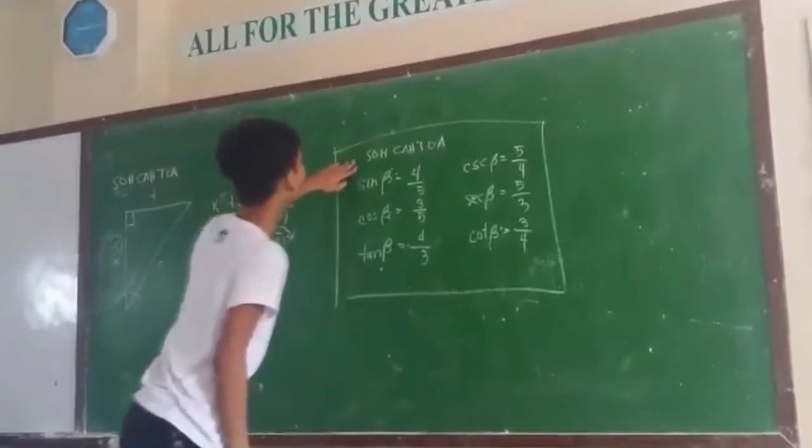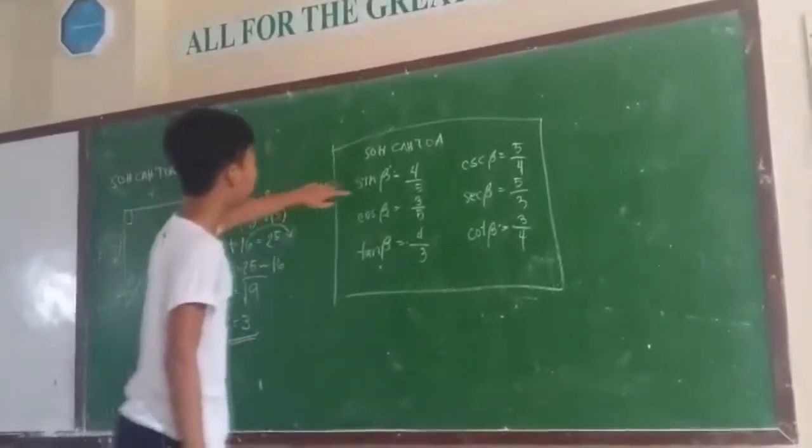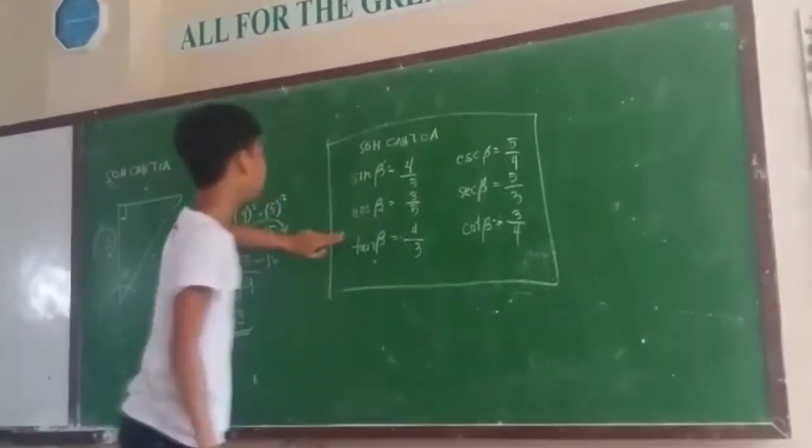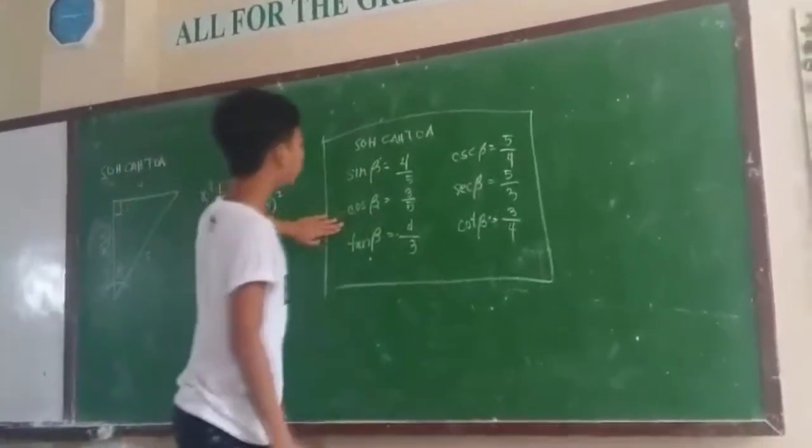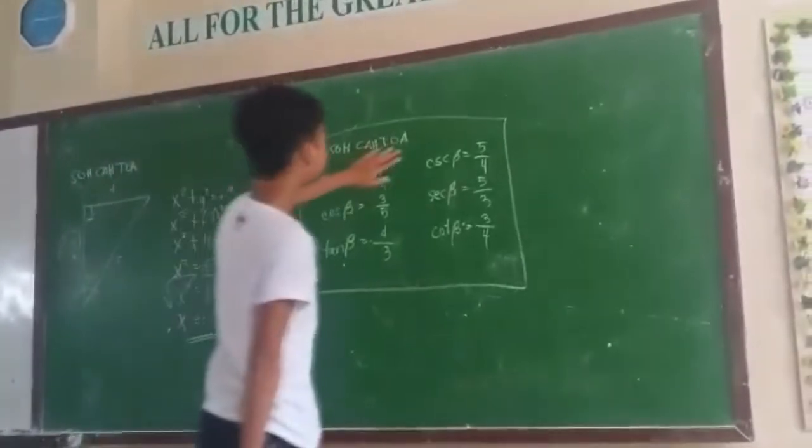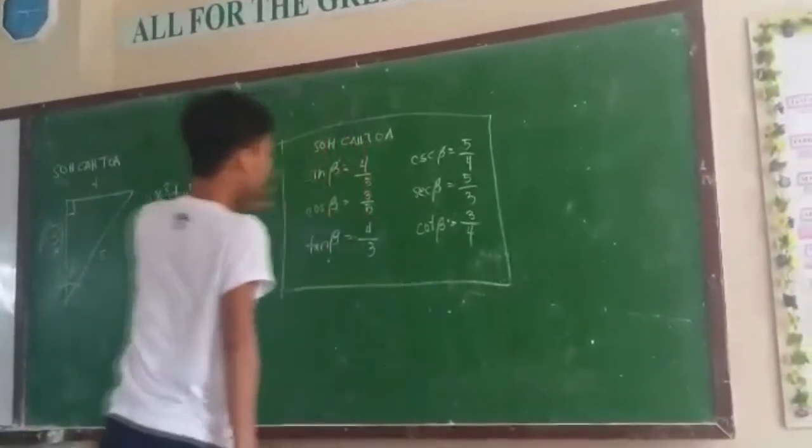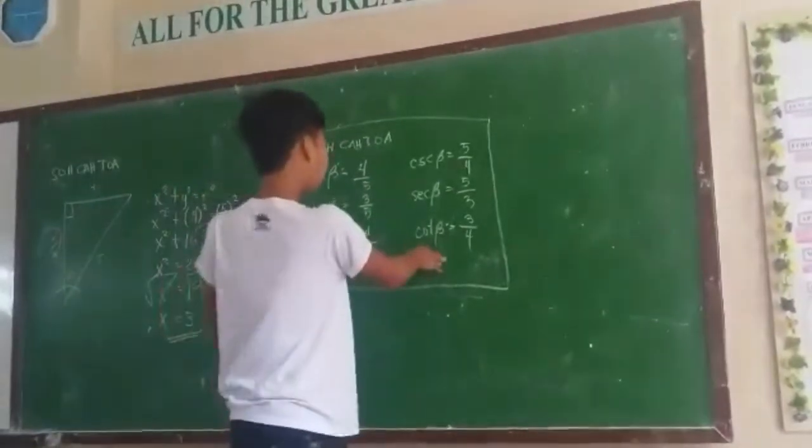And now to get SOHCAHTOA: sin θ equals 4 over 5, cos θ equals 3 over 5, tan θ equals 4 over 3, csc θ equals 5 over 4, sec θ equals 5 over 3, and cot θ equals 3 over 4.